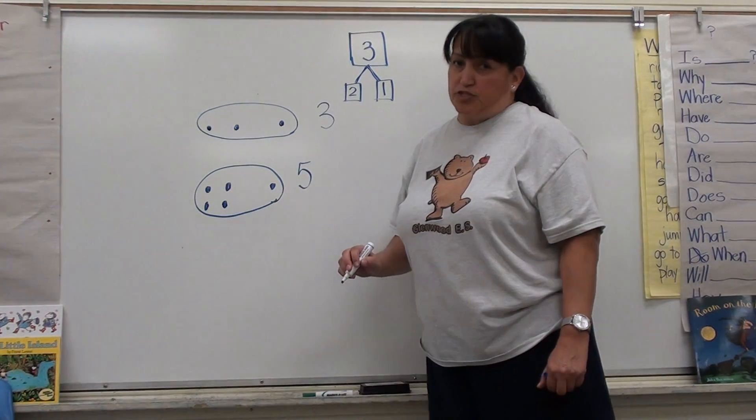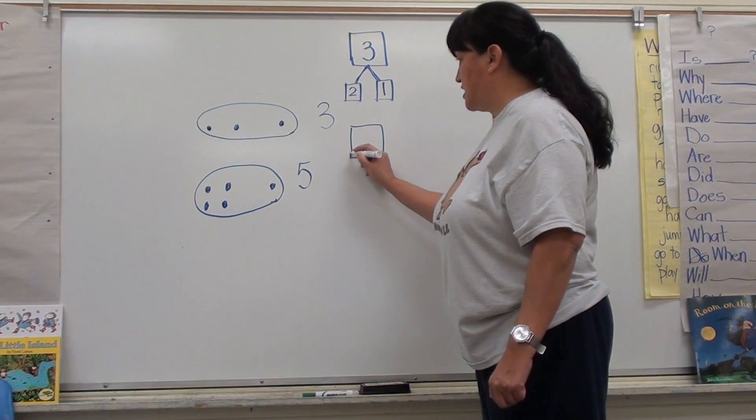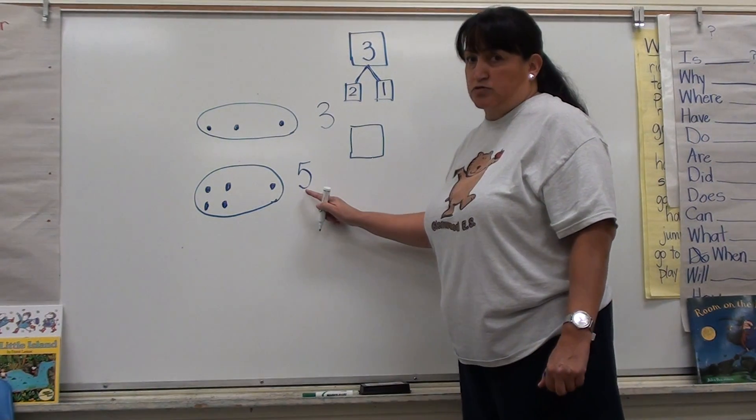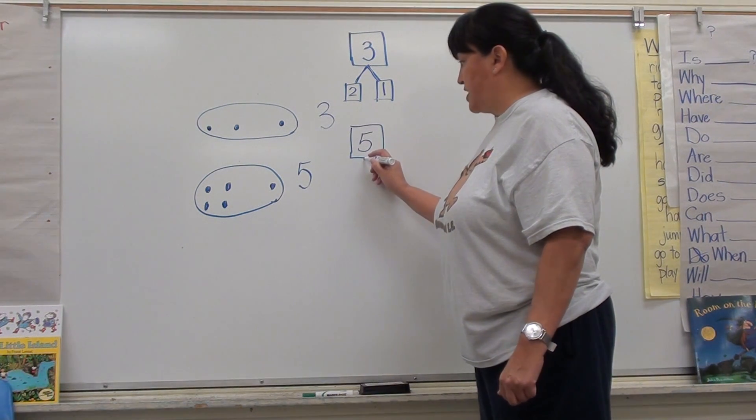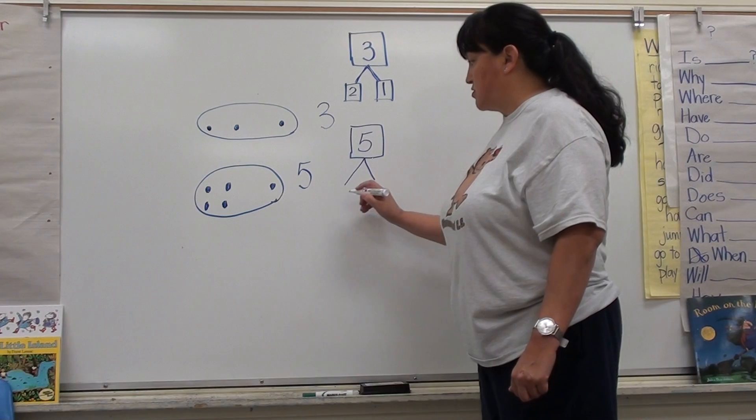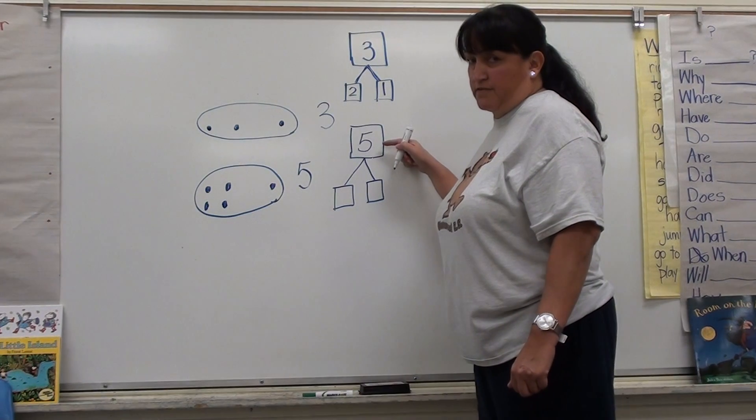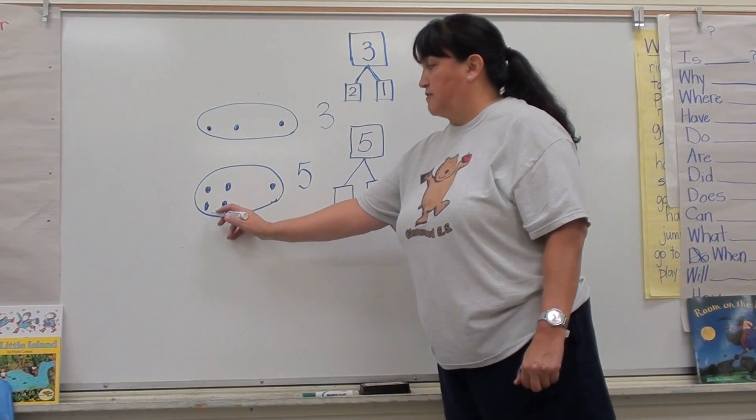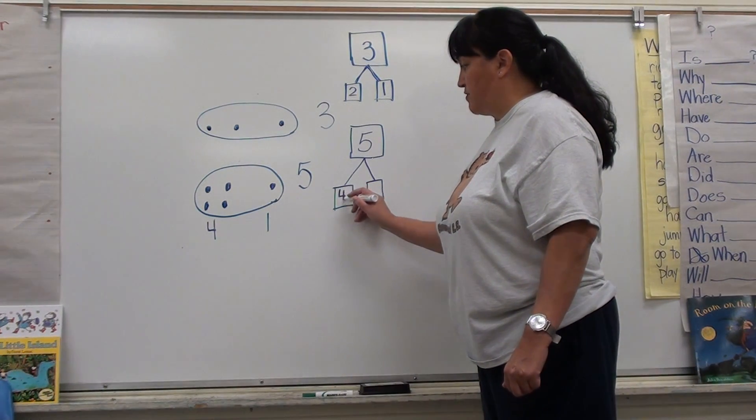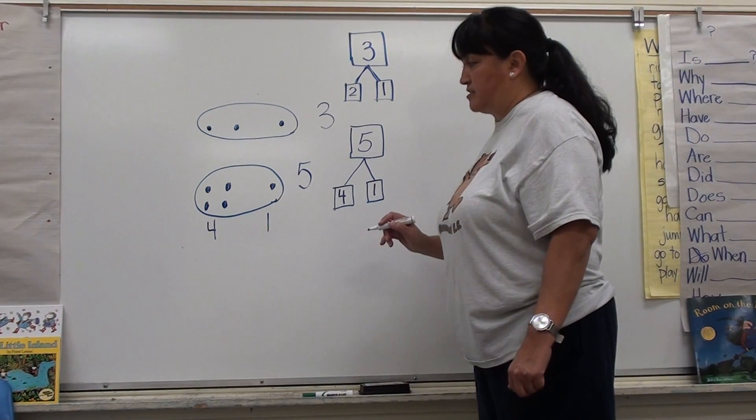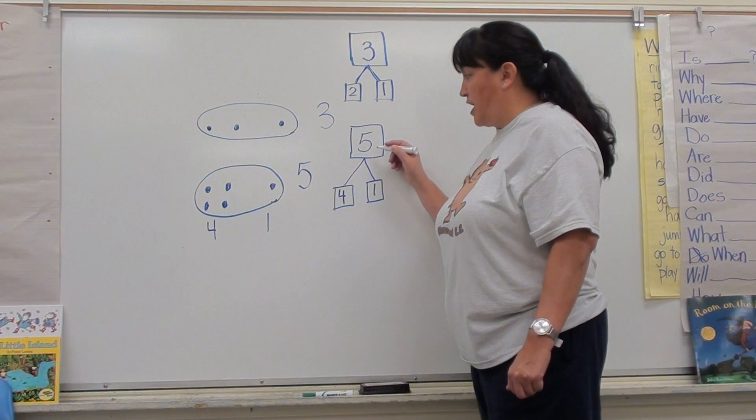So again, I'm going to make my number bond. I'm going to make the large box at the top and that will be my total number. That's my number five. I'm going to make my bonds for my parts that will go together to make number five. My parts are four and one. I will write the four first and then the one second. So if I put these two numbers together, I can get five.